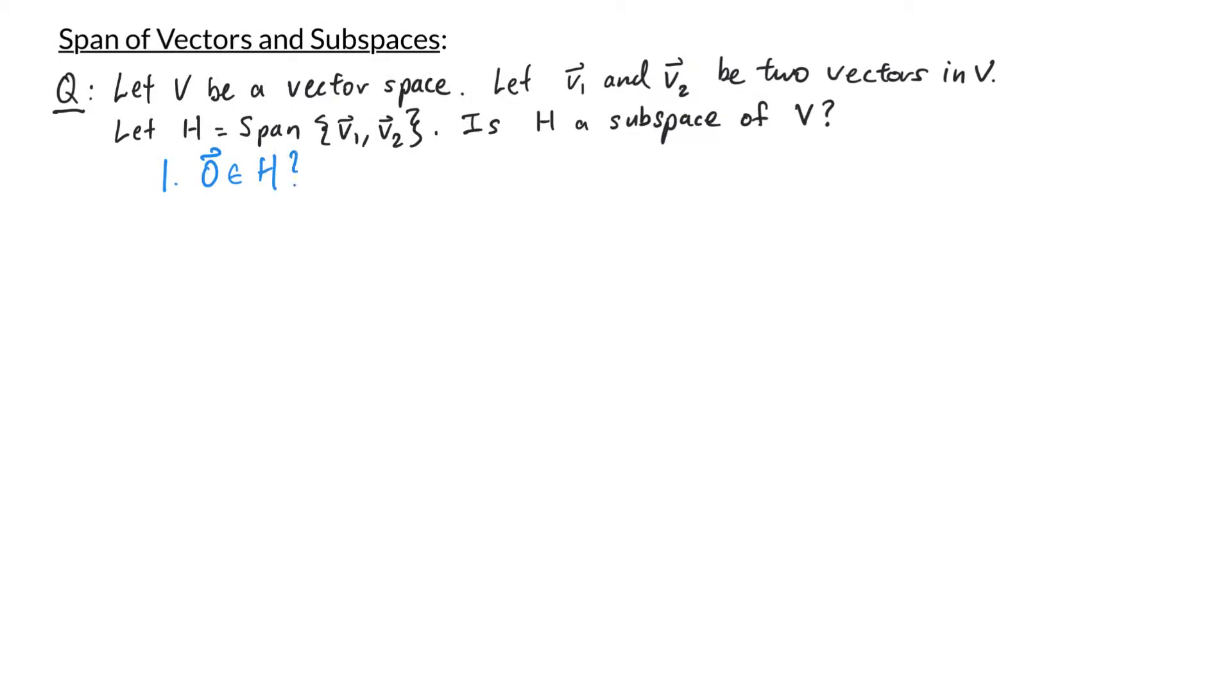If you remember, the span of a set of vectors is the collection of linear combinations of those vectors. So h consists of vectors that look like some constant c1 times v1 plus some constant c2 times v2. We can choose c1 to be zero and choose c2 to be zero and the resulting linear combination is the zero vector. So that tells me that the zero vector is in h.